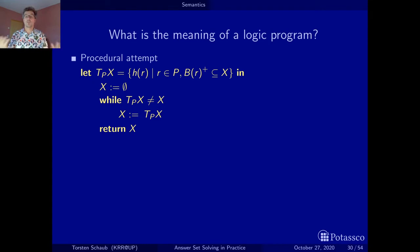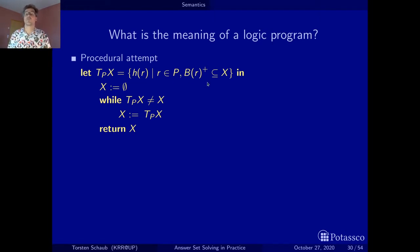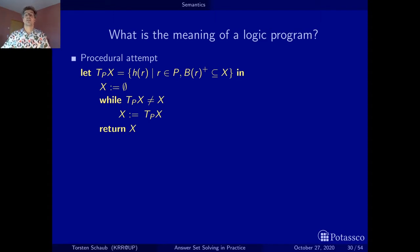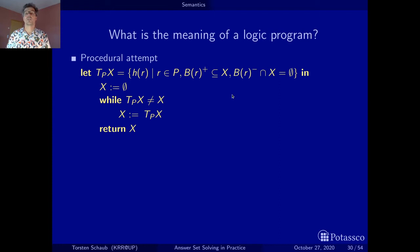Now we don't have positive programs anymore; we have programs with negation in the body — negative body literals. What we have to do is add a test for the negative body literals alongside the test for positive ones. We check whether all positive body literals are part of x, and analogously we test that none of the negative body literals are part of x.